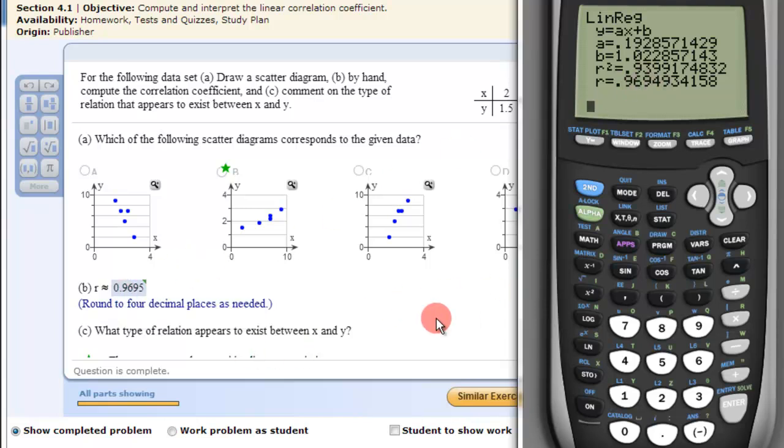So that's how you create a scatter plot and find the correlation coefficient on a TI-83-84 calculator.